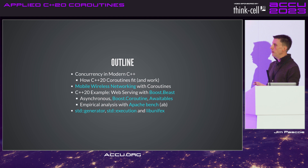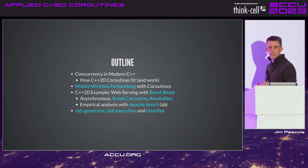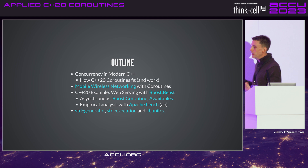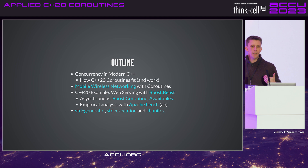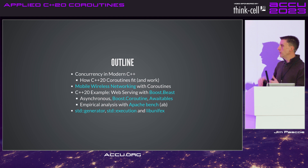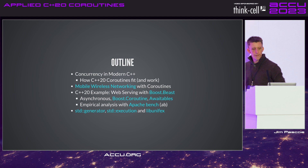We're going to look at three code examples: an asynchronous version, a version based on Boost coroutines (stackable coroutines), and C++20 awaitables. Then we'll do empirical analysis using a tool called Apache Bench — a benchmark tool for HTTP server installations that tells you how many requests per second your server can support. That's a useful metric everyone can grasp, and a nice way to compare performance between different approaches.